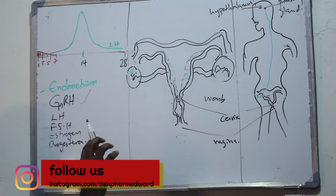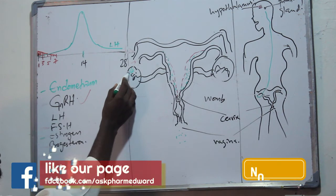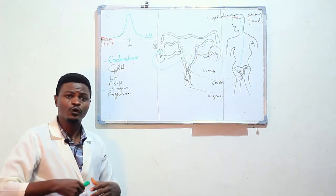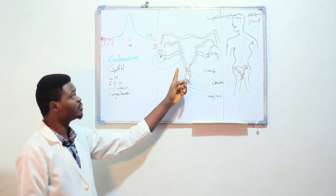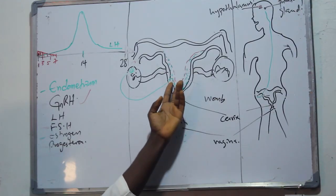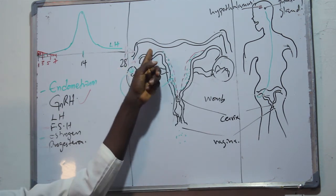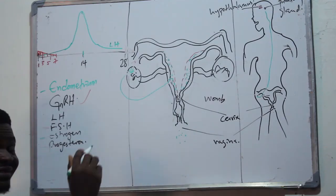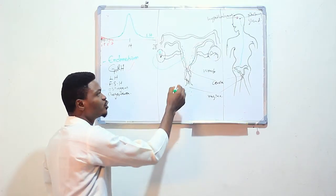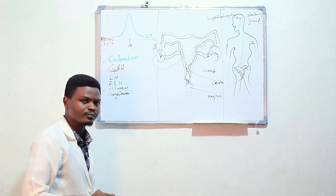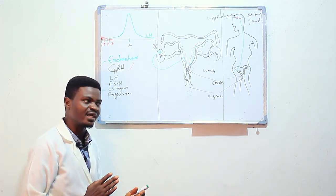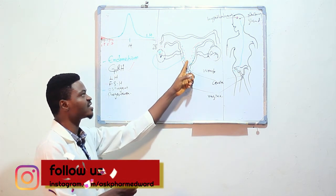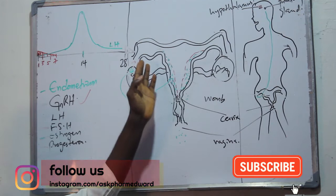This estrogen that is produced will now travel into the womb to begin to induce the development of the endometrium. Remember, you build a house for human beings to live in. Similarly, this estrogen begins to build the endometrium, the walls of the endometrium, preparing it for fertilization so that in an event of fertilization of an egg, the egg will see a comfortable house to come and implant and stay and develop. This same estrogen will also induce the cervix to begin to produce certain mucus. That sticky mucus is very necessary to enhance fertility. That's your first fertile period, so you need this mucus to aid the flow of the semen through the cervix into the womb and of course into the fallopian tube to fertilize the egg that will be released.